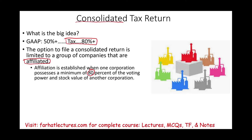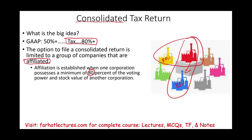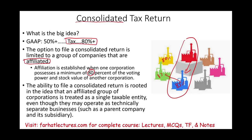Let's assume Red Company owns 85% of Blue Company — they can consolidate if they choose to. Let's also assume Red owns 80% of Yellow Company — Red can consolidate with Yellow as well, though Blue and Yellow are not directly connected to each other. If Blue owns 83% of Green, then Red owns Blue and also owns Green. The idea to file a consolidated return is rooted in the concept that an affiliated group of corporations is treated as a single taxable entity.